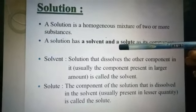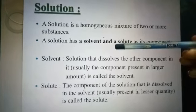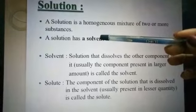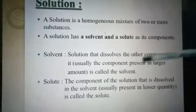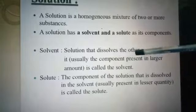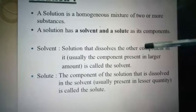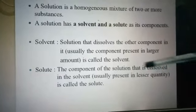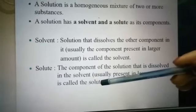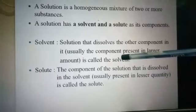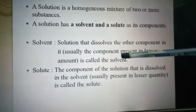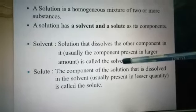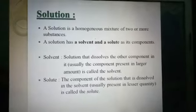For example, if you dissolve sugar in water, then sugar is the solute and water is the solvent. The component which dissolves other components is known as the solvent, and the component that is dissolved in the solvent is known as the solute. So in a sugar-water solution, sugar is the solute and water is the solvent.